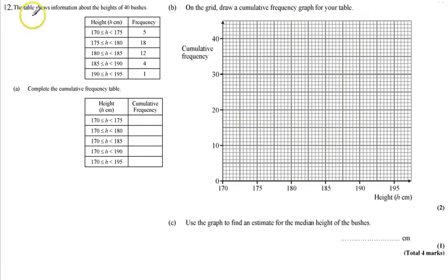Hi, in this question we're given a table that shows information about the height of 40 bushes. So for example, there are 18 bushes that are between 175 and 180 centimetres.